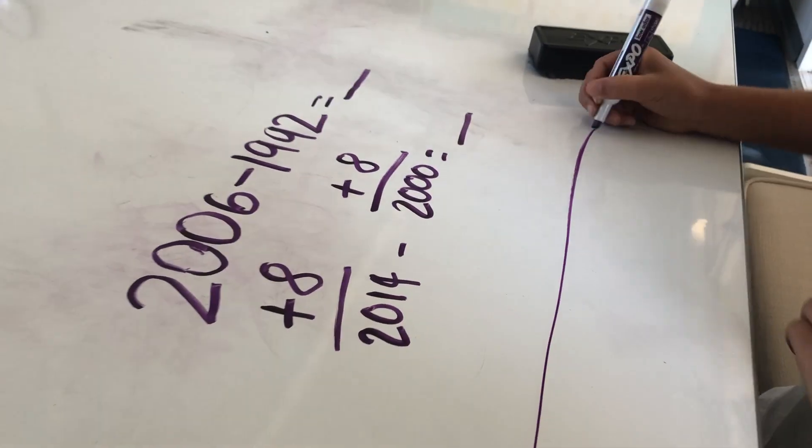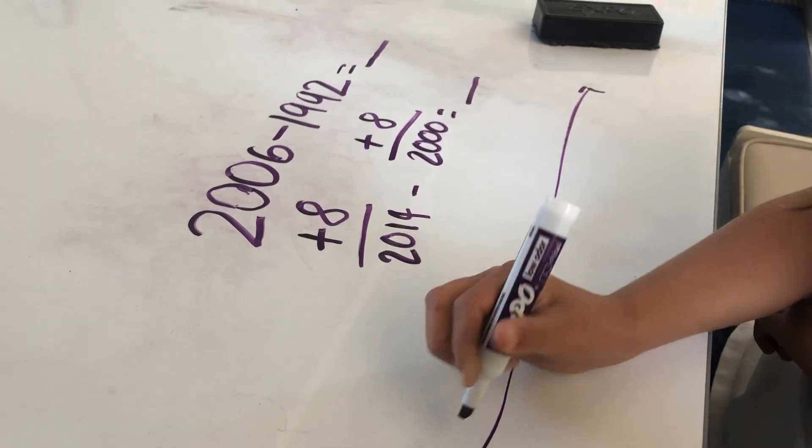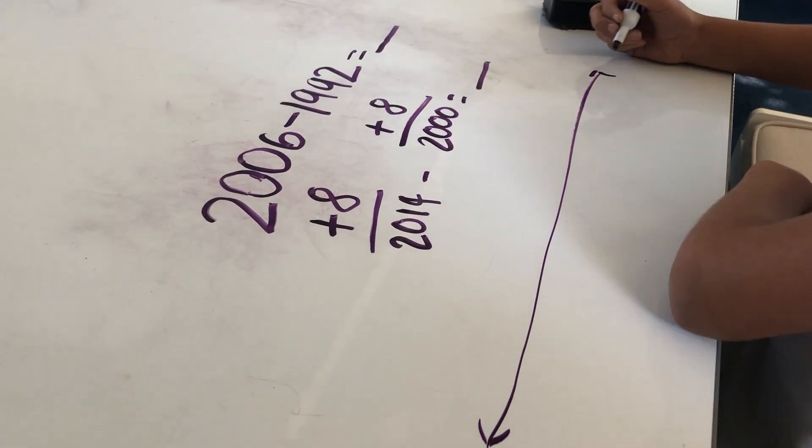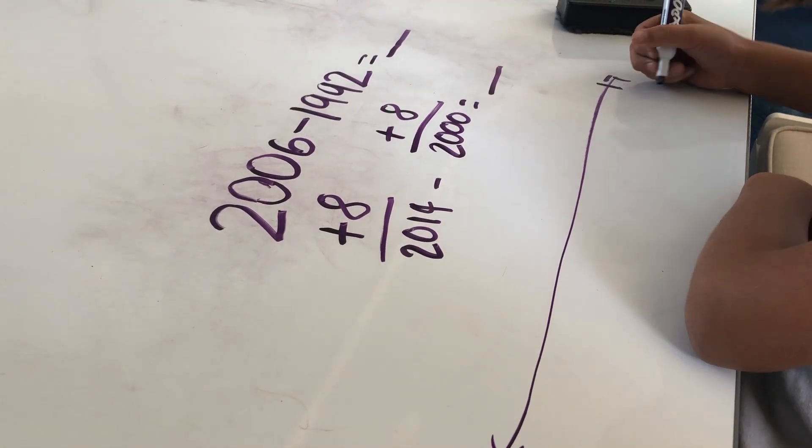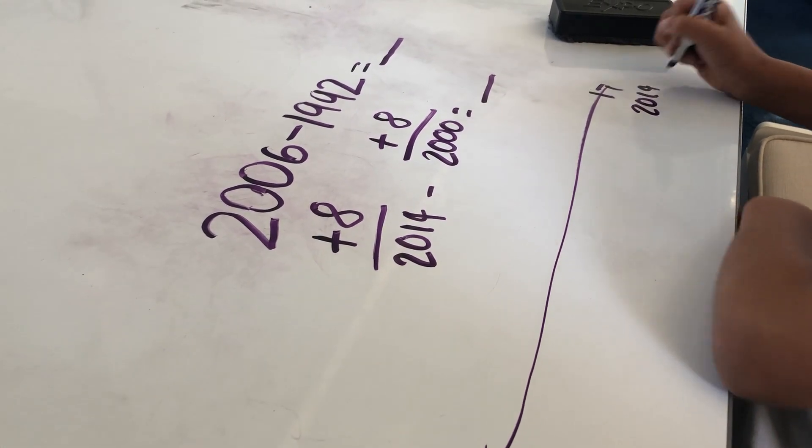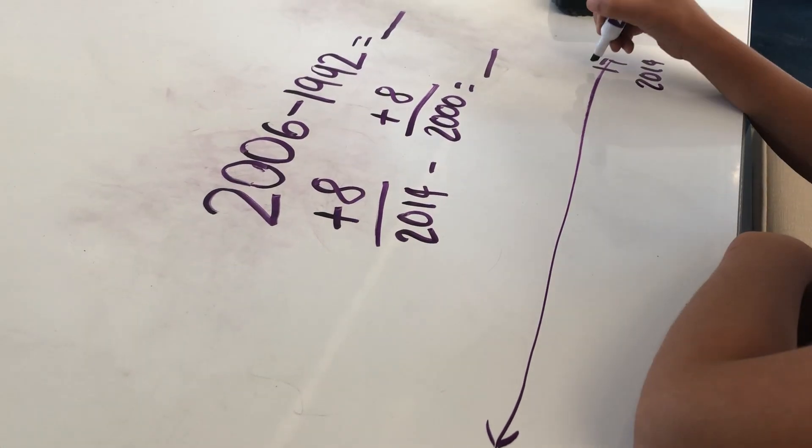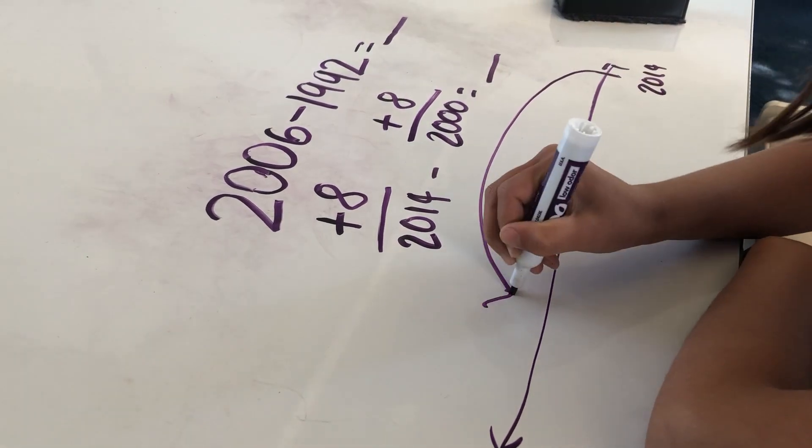So 2014 minus 2000. I would start at 2014 right over here, and then I would take away 2000.